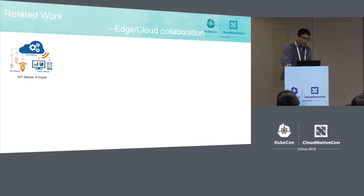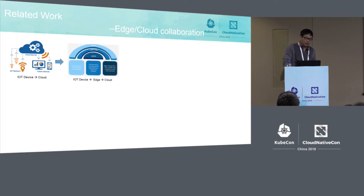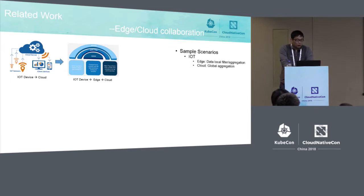Next, let's discuss related work in this area. The edge platform for major cloud providers like Amazon, Azure, and Alibaba actually originated from IoT platforms. For IoT platforms, devices send data directly to the cloud, but as data volumes grew too large for internet bandwidth, an edge layer was added between IoT devices and the cloud to perform local filtering and aggregation — for example, IoT data analytics — to reduce data volume before uploading to the cloud for global aggregation.